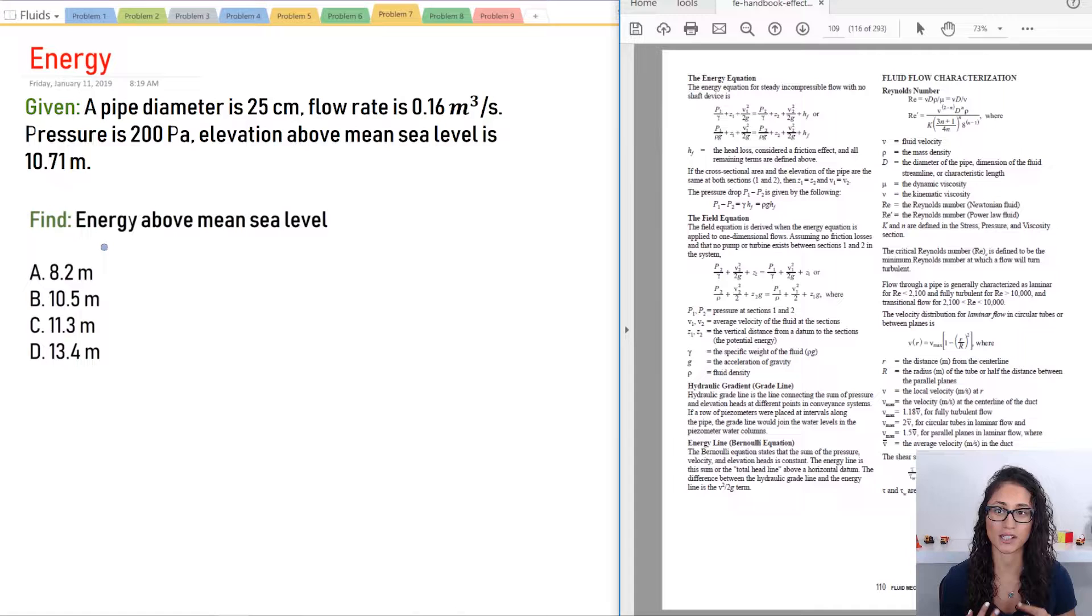Okay guys, so we're given a diameter that is 25 centimeters, flow rate is 0.16 cubic meters per second, the pressure is 200, elevation is 10.71 and we need to find the energy. Now I really like this problem because it really tests your understanding of the concepts for fluids.